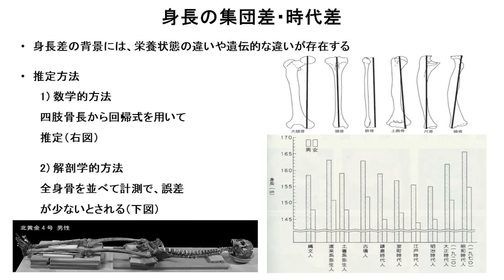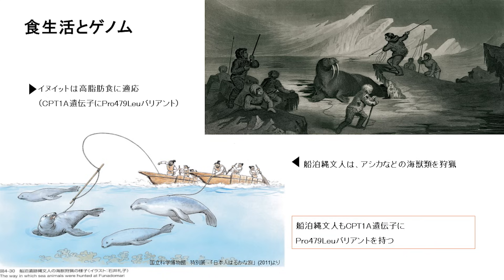ゲノムから推定する身長はかなり精度が悪いのですが、現在の東アジア人と比べて遺伝的に身長が高くなるのか低くなるのかといったことは推定することが可能です。今回の分析の結果、縄文人は現在の東アジア人と比べて身長が遺伝的に低くなる傾向があることが示されました。従来形態学的な研究から縄文人は渡来系弥生人に比べて身長が低いということが示されており、今回の分析結果では遺伝要因が少なくとも関わっているということが示されました。